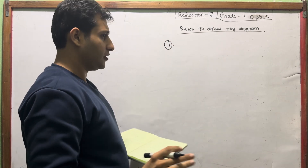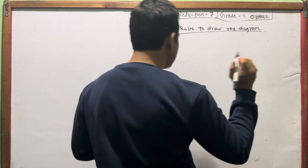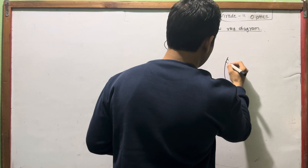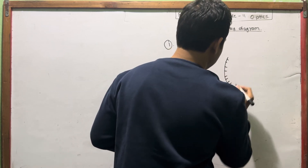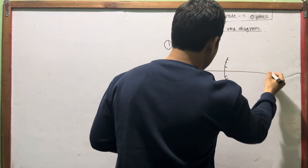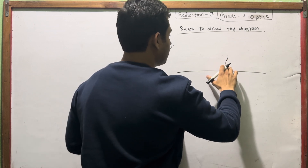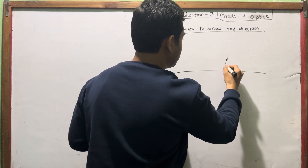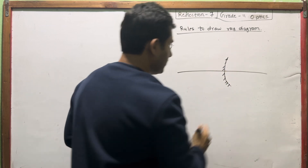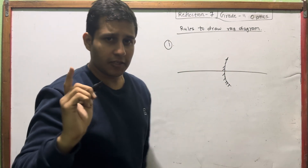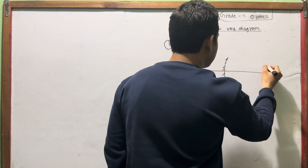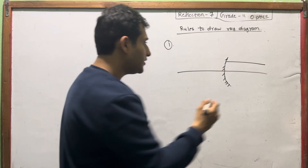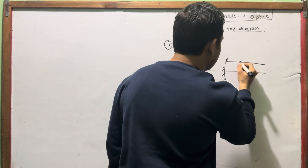There's a symbol here, and I'm going to show you something. This is a mirror. First, we have to draw the light on the mirror, and then we have to look at the principal axis parallel.